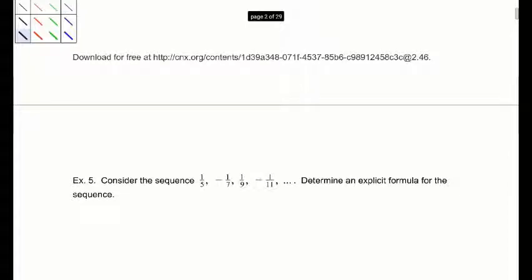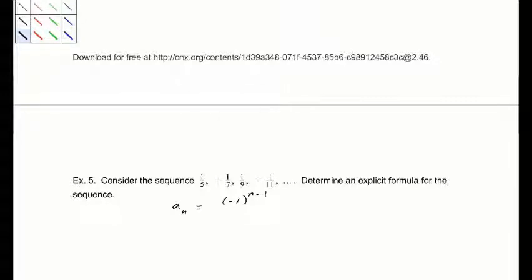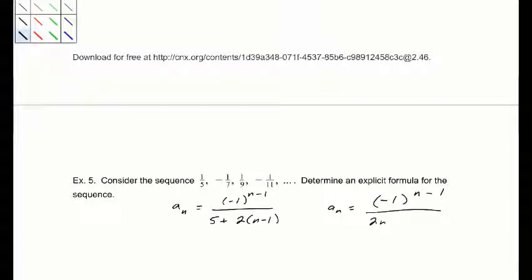Example 5: 1/5, negative 1/7, 1/9, negative 1/11. The numerators alternate between 1 and negative 1, so we use negative 1 to the (n minus 1) — plugging in n equals 1 gives positive, n equals 2 gives negative, which alternates properly. The denominator is 5 plus 2(n minus 1), which simplifies to 2n plus 3. So the explicit formula is (negative 1)^(n minus 1) over (2n plus 3).